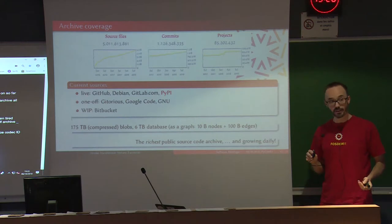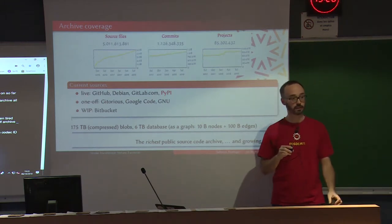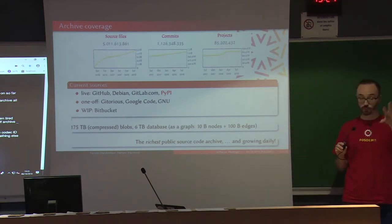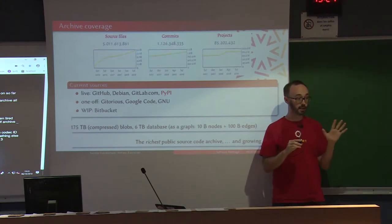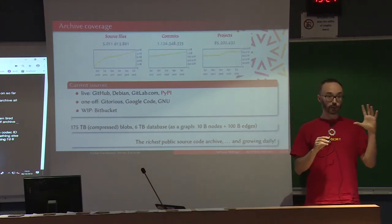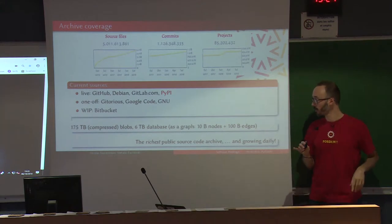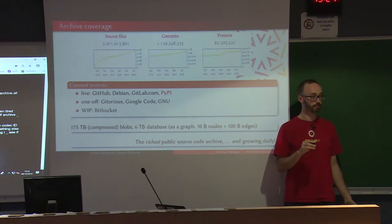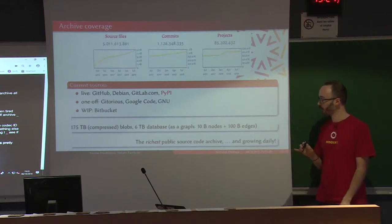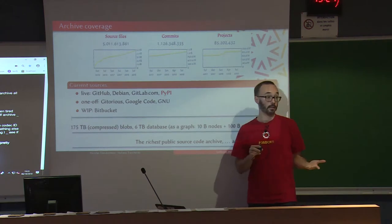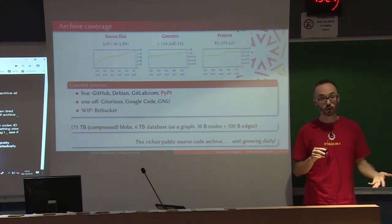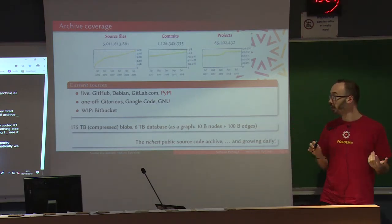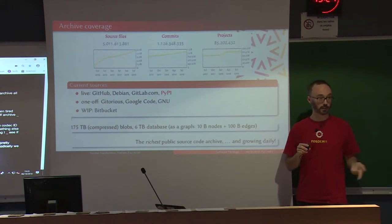In terms of size, it's something south of 200 terabytes in raw content, and the graph structure is a database of about 6 terabytes. Looking at the conceptual computer science model, it's a big graph — 10 billion nodes and more than 100 billion edges — quite challenging to deal with. And it's growing daily as we add new origins to crawl, new loaders for new version control systems, and new content gets published and archived.